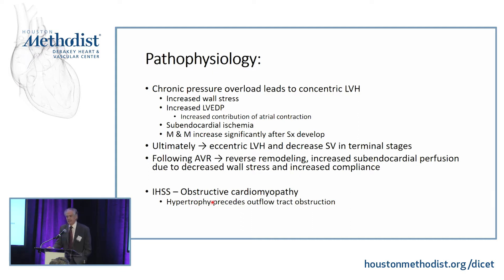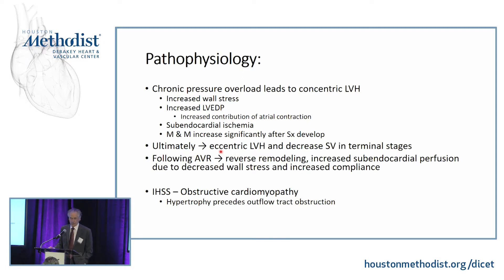Pathophysiologically, increased outflow tract obstruction leads to increased wall stress and eventual left ventricular hypertrophy. As hypertrophy develops, the ventricle becomes stiffer, left ventricular end-diastolic pressure increases, and subsequently pulmonary artery pressure increases as well. Ultimately, as the ventricle fails, eccentric hypertrophy develops as these compensation mechanisms fail and the ventricle dilates. Following AVR, we expect some reverse remodeling, but it is difficult to predict exactly how much reversal we will get.